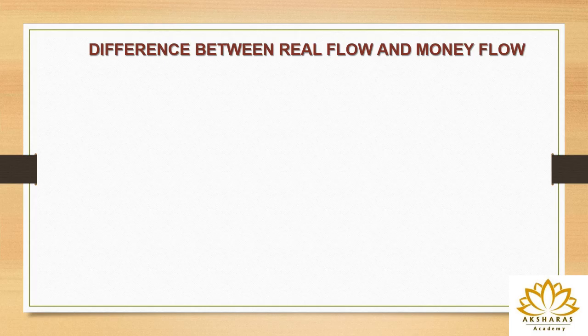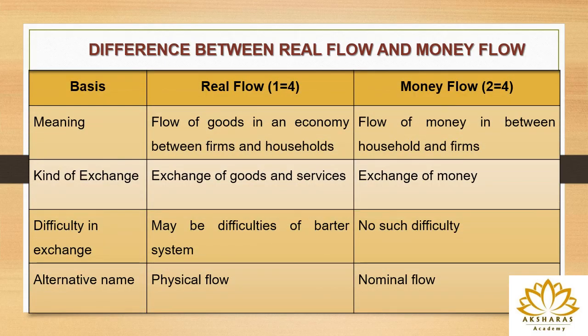The difference between real flow and money flow: in terms of meaning, real flow is the flow of goods in an economy between firms and households, while money flow is the flow of money between households and firms. In terms of exchange, under real flow there is an exchange of goods and services, whereas under money flow everything is exchanged against money. In terms of difficulty, real flow may have difficulties due to the barter system, while money flow has no such difficulty since everything has a monetary value. Real flow is also known as physical flow and money flow is also known as nominal flow.